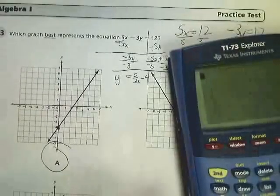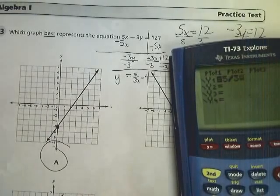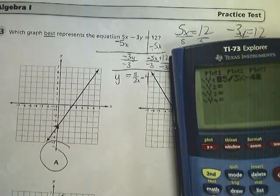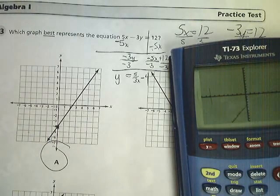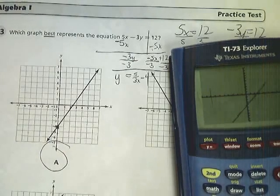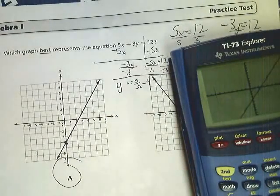Sorry about my crappy handwriting. There it is. It's the only one that looks like this. So the answer to number 33 is A.